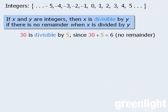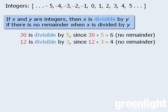For example, 30 is divisible by 5 since 30 divided by 5 gives us a quotient of 6 with no remainder. Similarly, 12 is divisible by 3 since 12 divided by 3 is equal to 4 with no remainder.